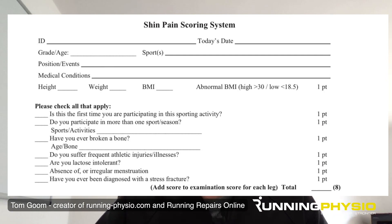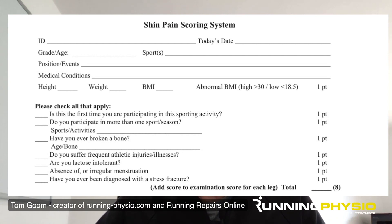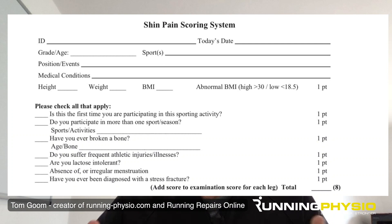A few questions to highlight: Do you participate in more than one sport season? There's evidence showing that people who have participated in more than one season of sport are more likely to experience bone stress injury. Are you lactose intolerant? That may affect whether you can take on the important nutrients and vitamins for bone health. Absence or irregular menstruation — we know menstrual function is linked to bone health. And also: have you been diagnosed with a stress fracture previously? Research shows that a prior stress fracture increases the likelihood of a future one. A lot of these questions are about identifying at-risk individuals — young women with low BMI and impaired nutrition are in a risk category, so we'd be more suspicious and perhaps more careful with our investigation.